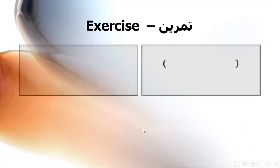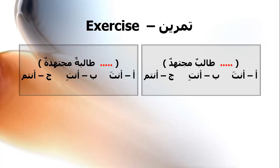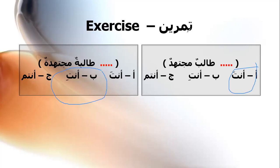Let's take an exercise. طالب مشتهد — should I say أنت طالب مشتهد, أنتِ طالب مشتهد, or أنتم طالب مشتهد? The answer is أنت — with the masculine form, because طالب is masculine singular.